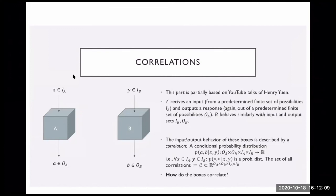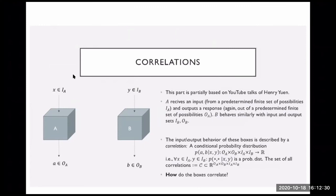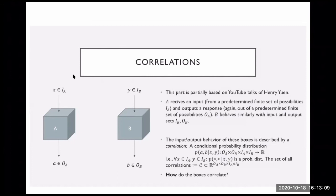We should think of two boxes — box A and box B. Each box gets an input from a finite set of possible inputs. Box A has a finite set of possible inputs; box B has a finite set of possible inputs. Then each one gets an input and they produce an output — small a and small b. The outputs also come from some fixed, finite set of possibilities.